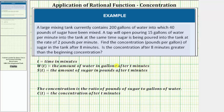Let's begin by focusing on the amount of water. The tank begins with 200 gallons of water. Once the tap opens, water is added at a rate of 15 gallons per minute. Because the rate of change is constant, w(t) is a linear function. So w(t), the amount of water, is equal to the beginning amount of 200 gallons plus 15 gallons per minute times t. So w(t) = 200 + 15t.